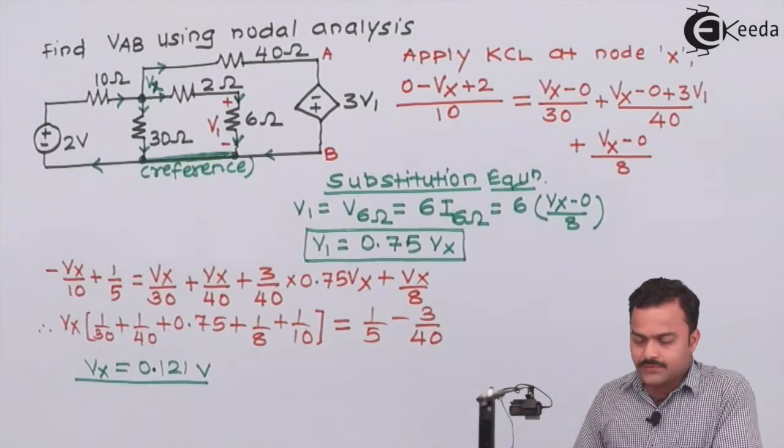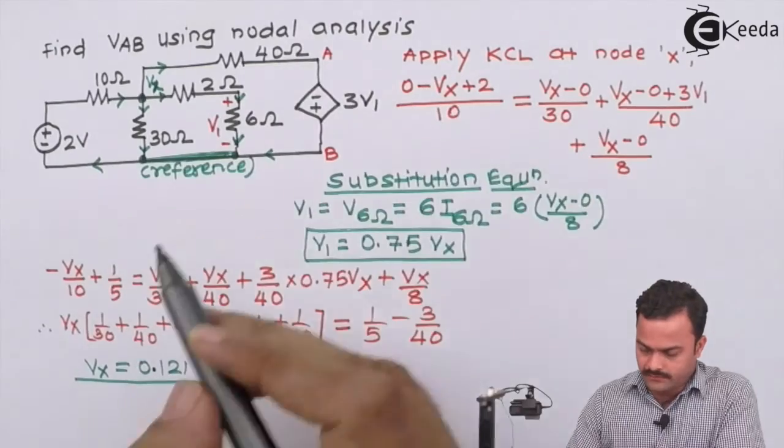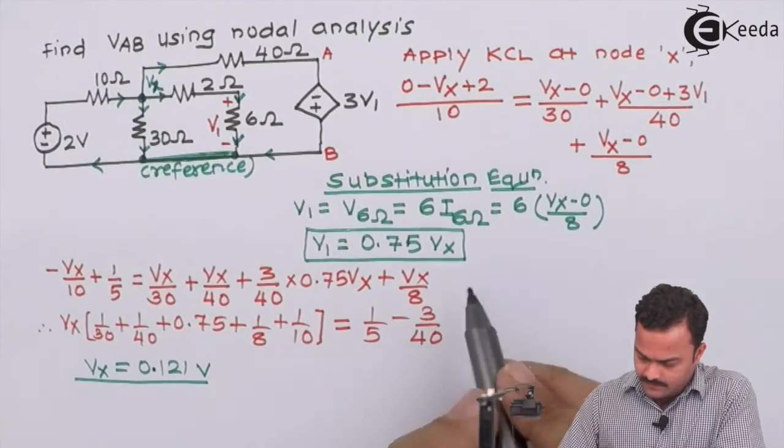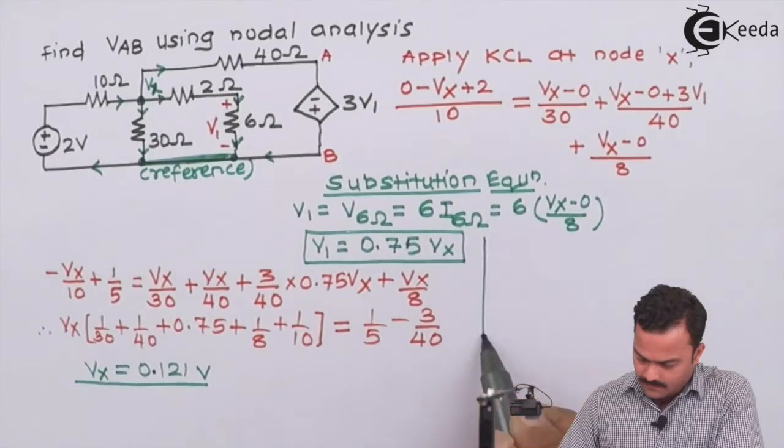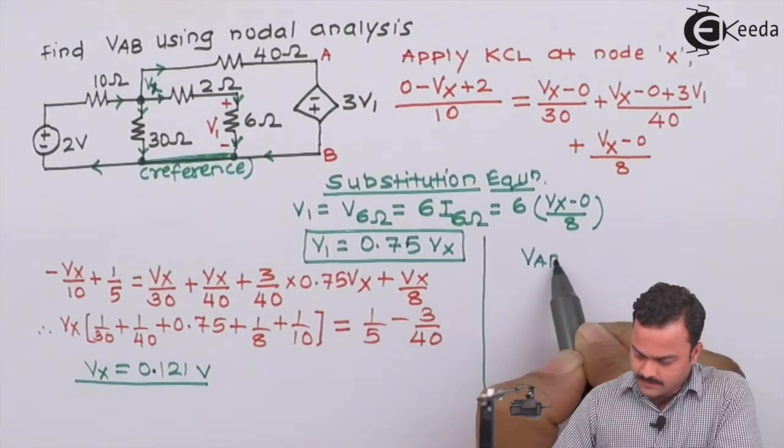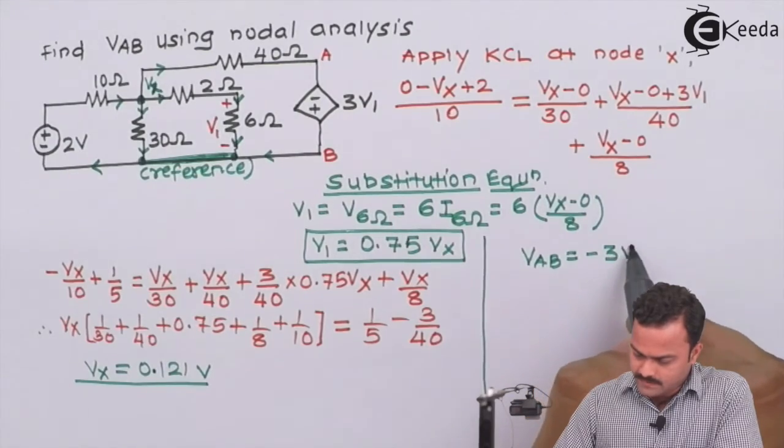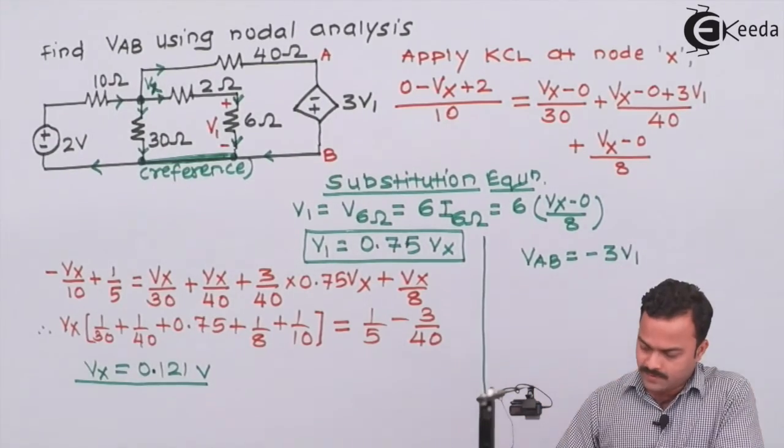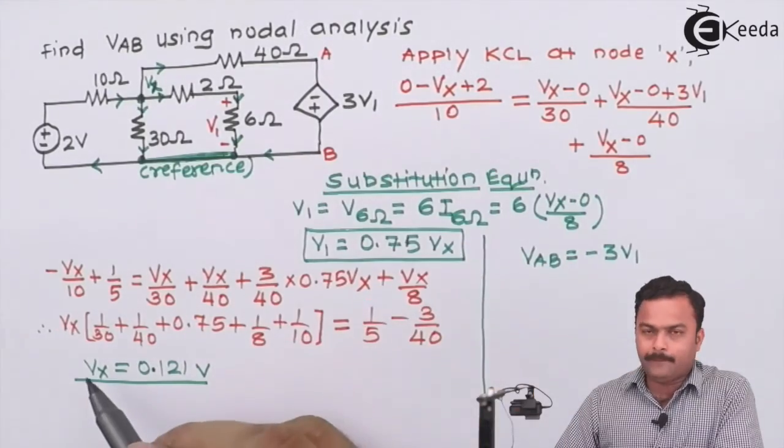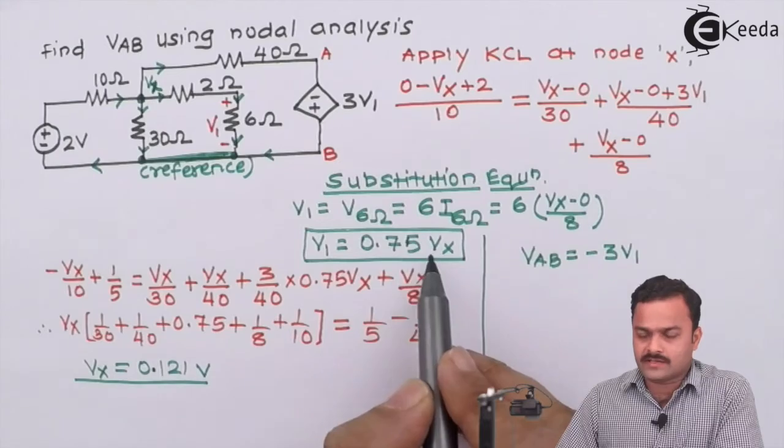But this is not the answer that we are supposed to get. We have to get the value Vab. So if you see carefully, Vab is nothing but minus 3 times V1. Why minus? Because the polarity of A is negative with respect to B.